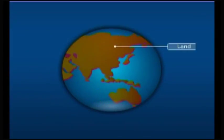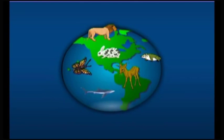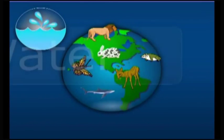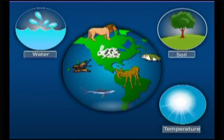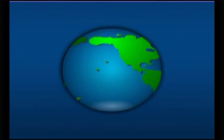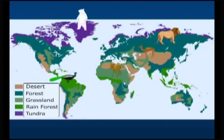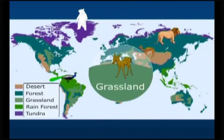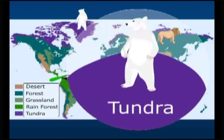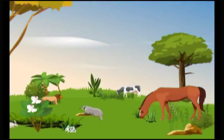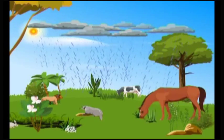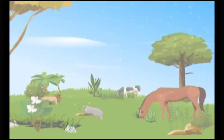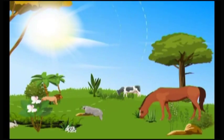The land covers one-fifth of the surface of the planet and is a major habitat. Water, temperature and soil conditions are the major factors that affect life in terrestrial habitats. The living conditions on land depend on the geographical location of the place. In addition to this, day and night and seasonal changes are also factors which affect the life of organisms in the terrestrial habitat.